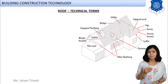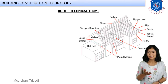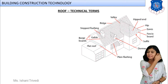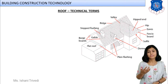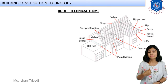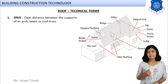Now we are moving to the first concept: technical terms of a roof. Then we will move forward with the classification and discuss various types specifically. We will discuss certain technical terms regarding the roof. We are considering the pitch roof, also called slope roof — both are the same.